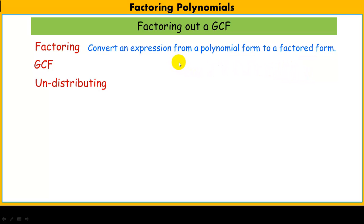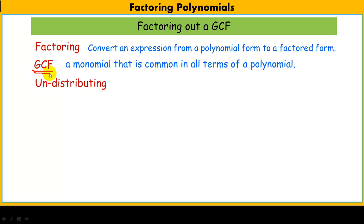What we're doing today is factoring out a greatest common factor. A greatest common factor is a monomial that is common to all terms in the polynomial that we're factoring — it has to show up in all terms. When we say factor it out, we're really using the distributive property, but we're using it backwards.